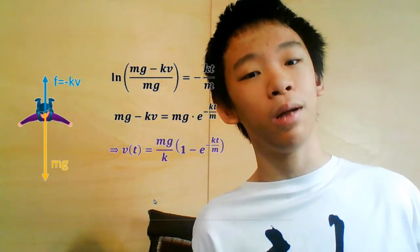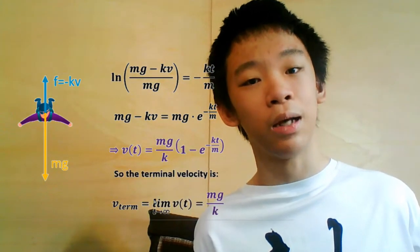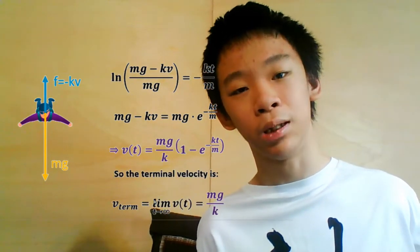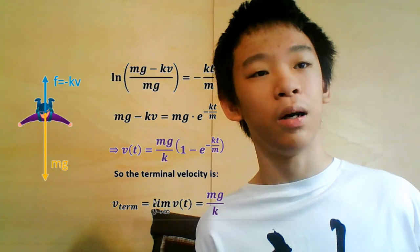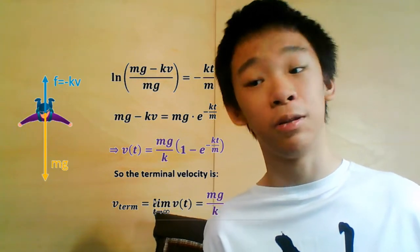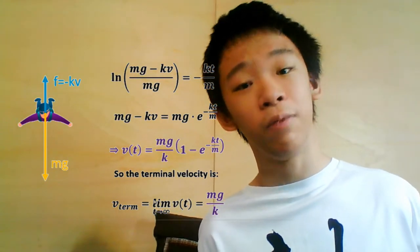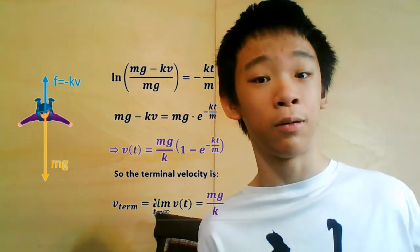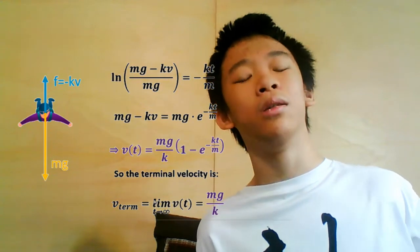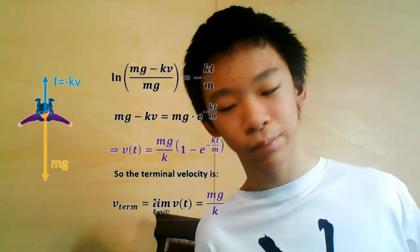To get the terminal velocity, we take the limit of v(t) as t goes to infinity. The limit of e to the negative kt over m goes to zero, because e to the negative infinity goes to zero. So the terminal velocity is mg over k.